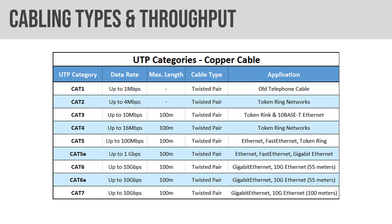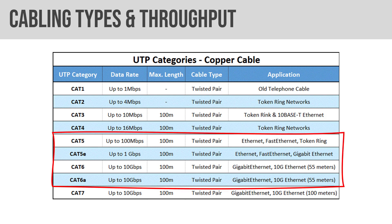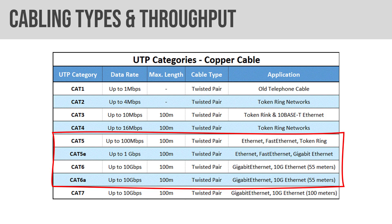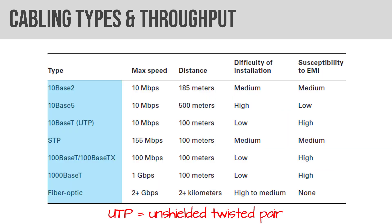Cabling types and throughput — not the most exciting topic, but it could well come up on the exam. You want to be familiar with the max length, the cable type — which is going to be unshielded twisted pair (UTP). Cat5 through Cat6 are the most common. You could get questions outside that, but those will be the most common nowadays. Lock in that UTP equals unshielded twisted pair, and be familiar with cabling types from 10Base-2 through fiber optic.